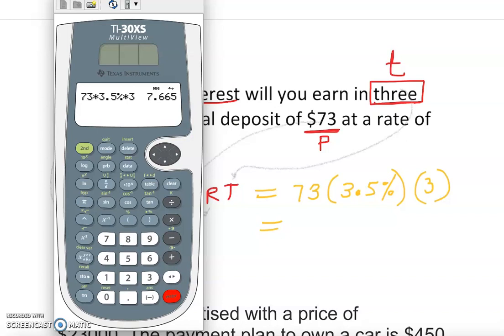Notice I have something 7.665. You never hear someone say seven dollars, six hundred sixty-five cents. We don't say something like that, so we're going to round up to approximately $7.67.